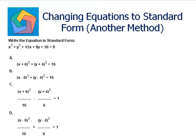I will club the x terms and y terms together. So I can say x squared plus 12x plus y squared plus 8y plus 36 equals 0. Now, in order to complete the square, I will take the coefficient of the x term divided by 2 and square it.